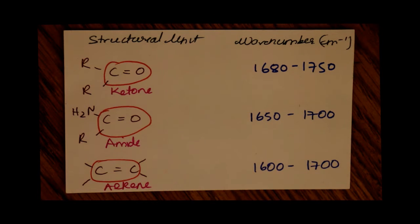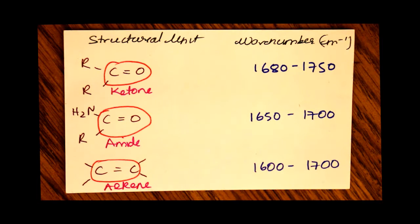For the bond between carbon and oxygen — a double bond in an amide — the range for the peak is between 1650 and 1700 inverse centimeters.